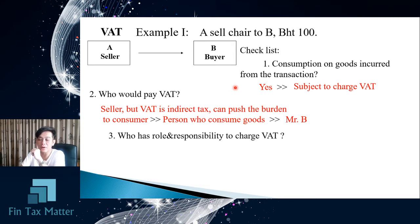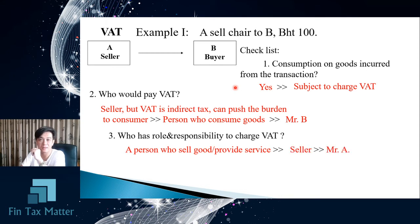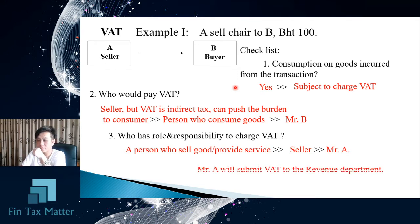Who has the role and responsibility to charge VAT? By the law, the person who sells the product is liable to charge VAT. So Mr. A, as the seller, has the accountability and responsibility by law to charge VAT. Mr. A will submit the amount of VAT collected from the buyer, Mr. B, to the Revenue Department each month. In Thailand, we use a monthly basis for VAT collection, calculating output VAT minus input VAT.